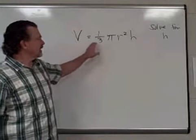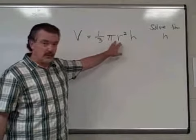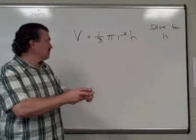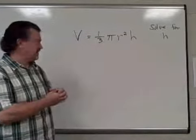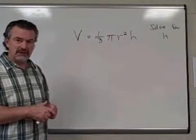But the volume is found by taking one-third times pi times r squared, that's the radius of the circular base of the figure, times the height of the figure. And again, that's a cone, I believe. So let's solve this equation for h.